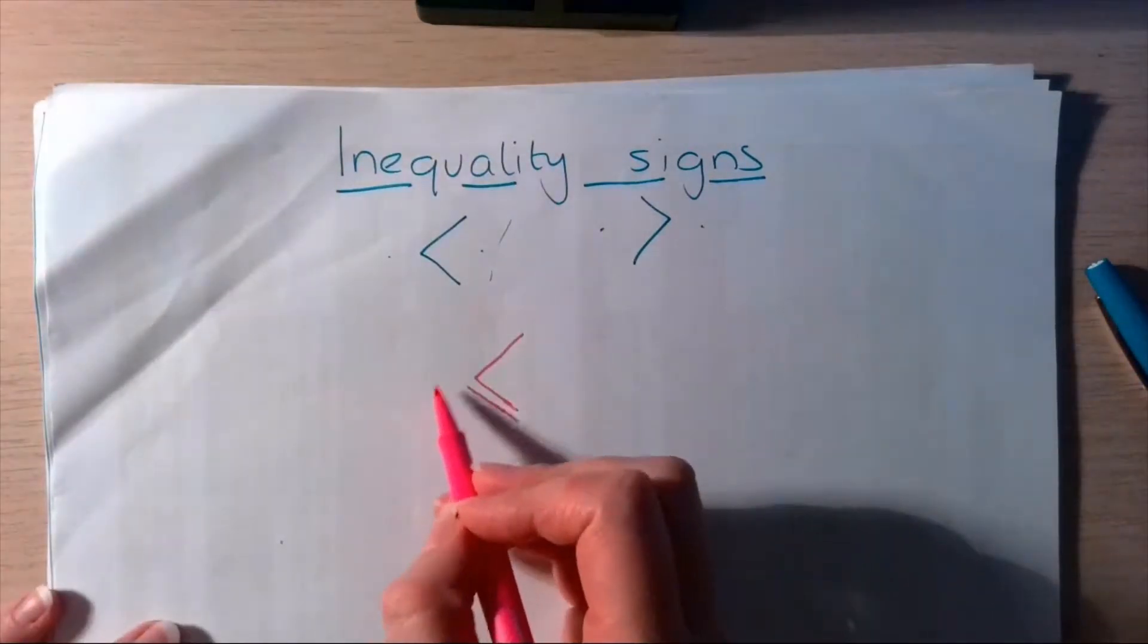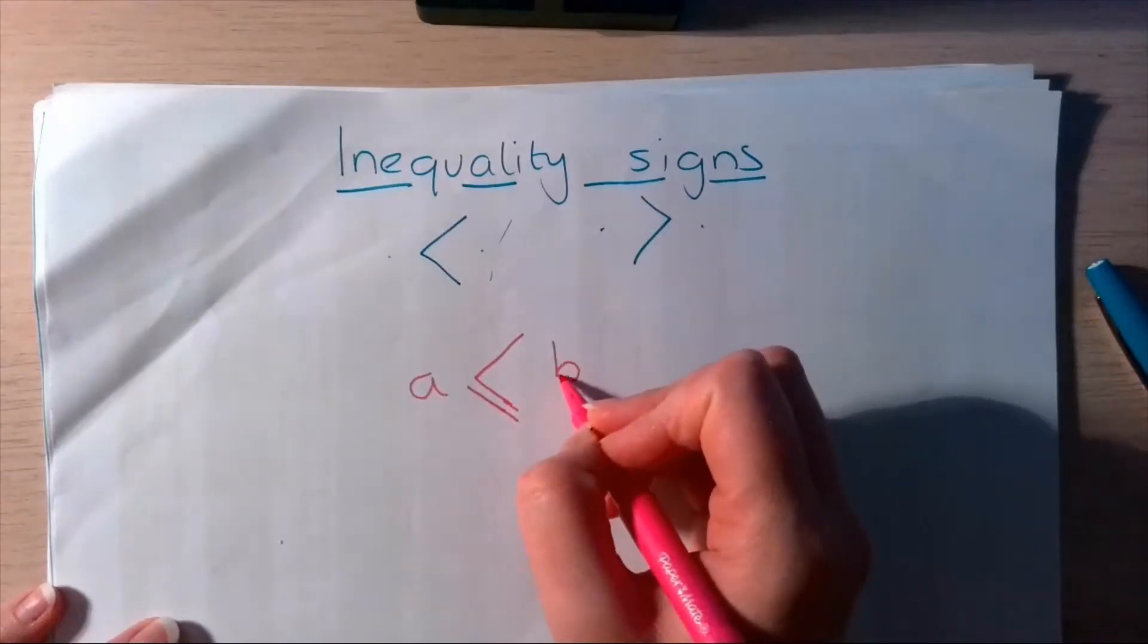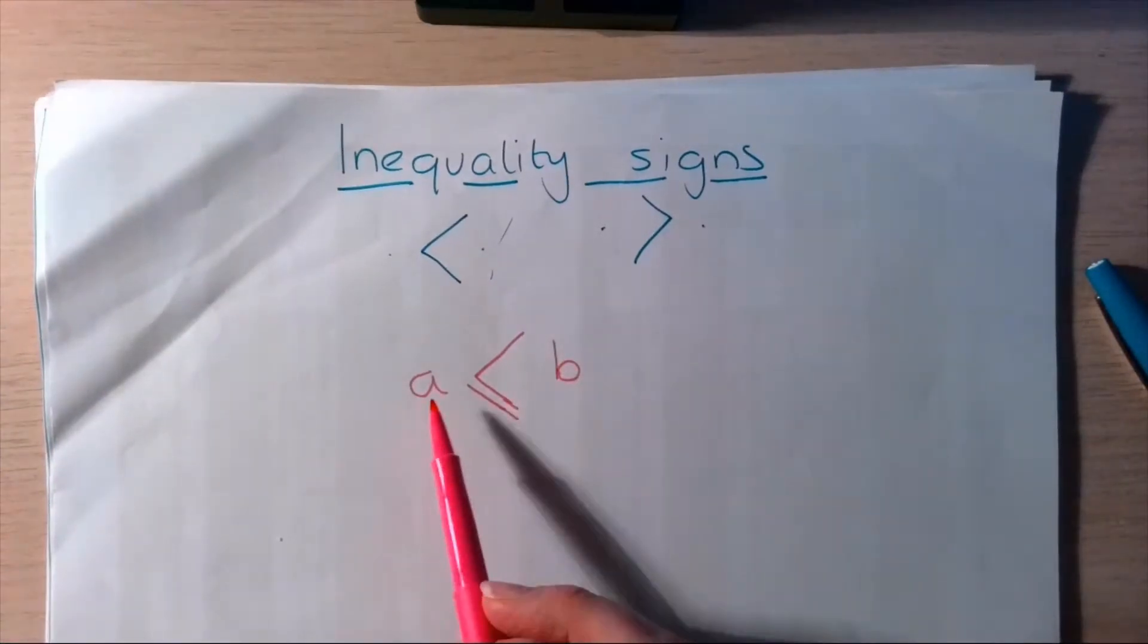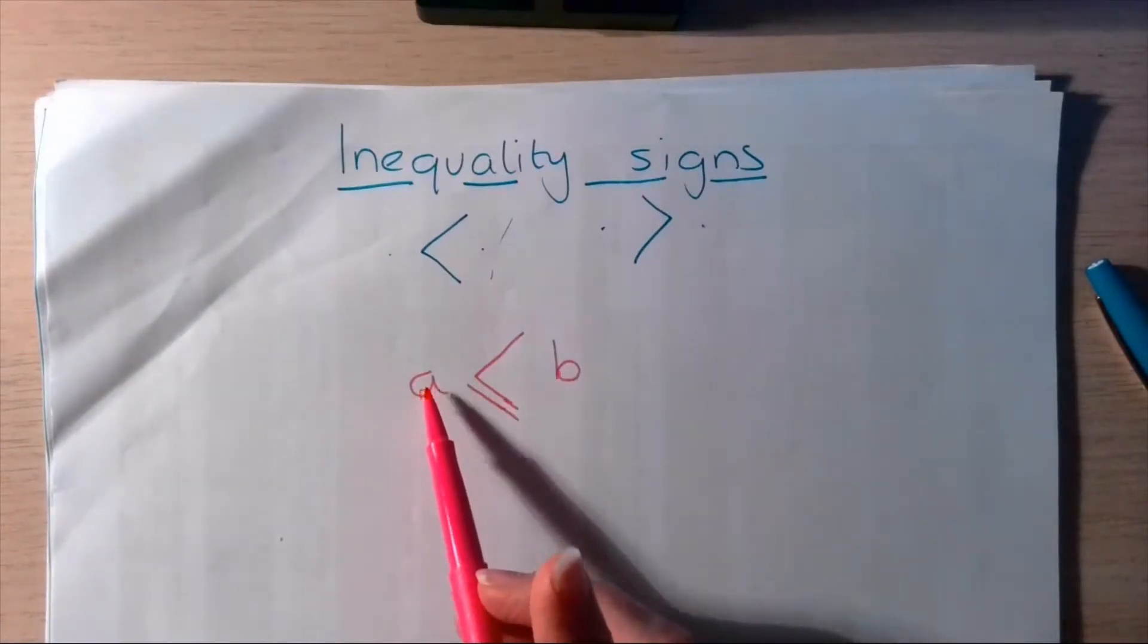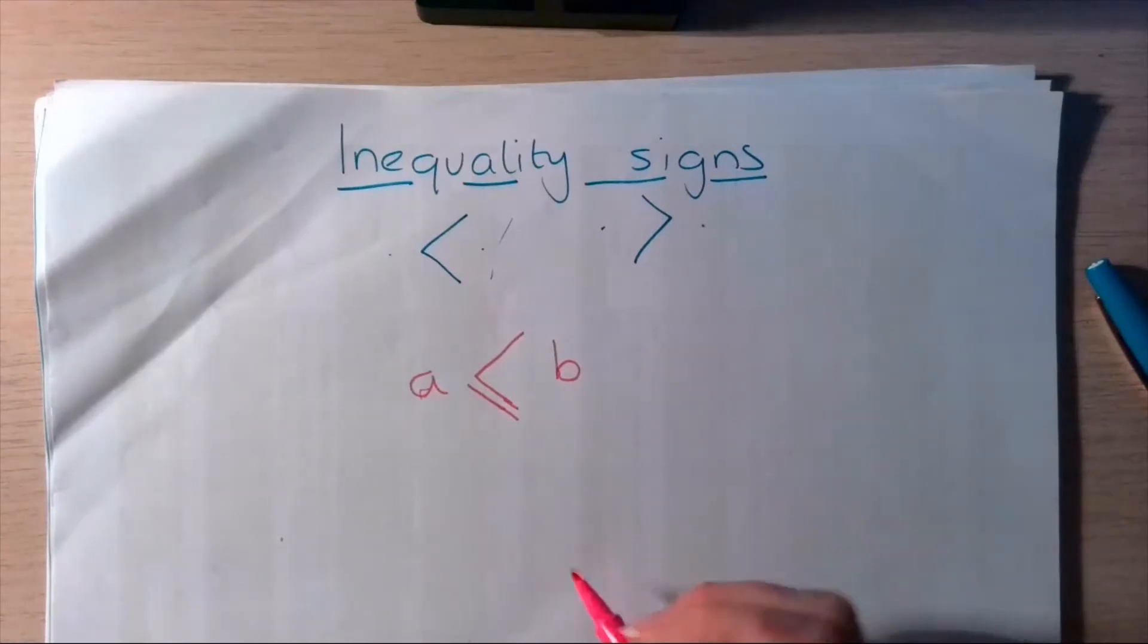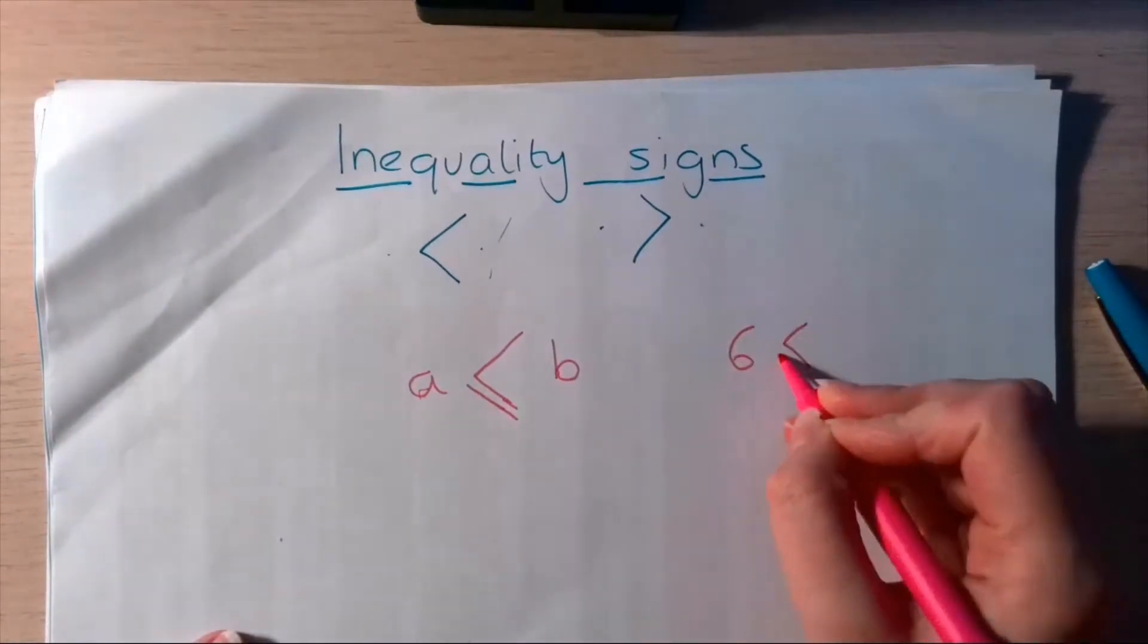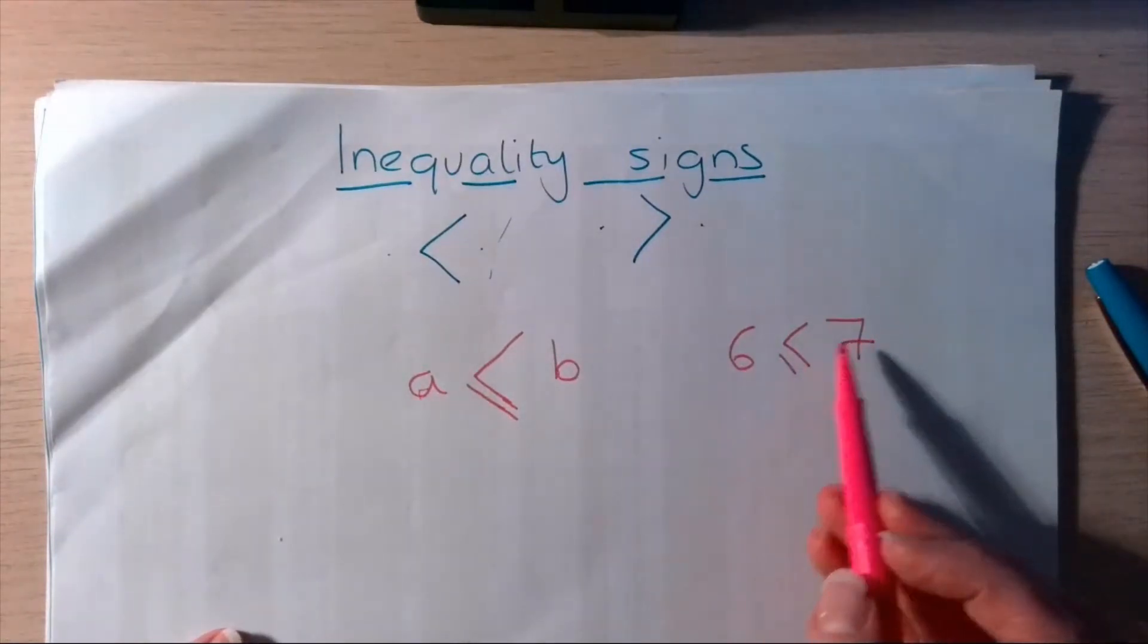And what this means is that the number on this side, I'm going to call these numbers a and b just for now. It doesn't mean anything, but it just means I don't have to keep saying the number and the number. So, what this means is that a is smaller than or equal to b. And that's important. It's not just smaller than, it could be equal to b. So, for example, if I had the numbers like this, 6 is less than 7, absolutely right.